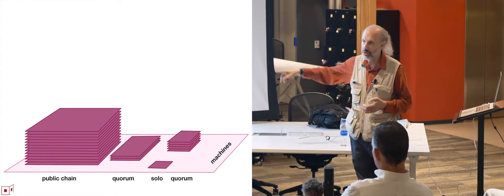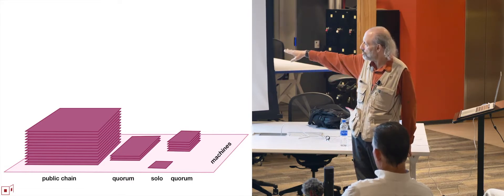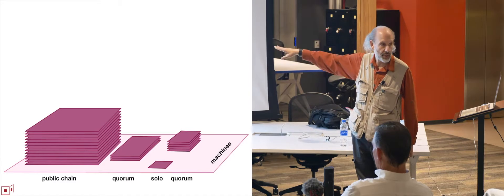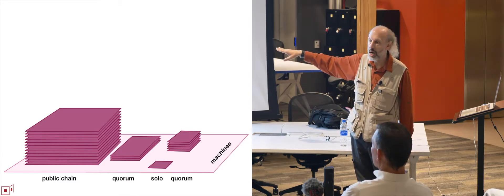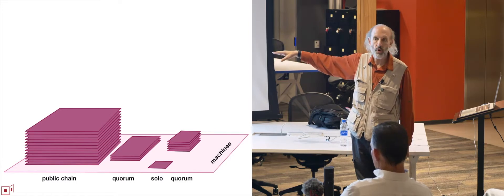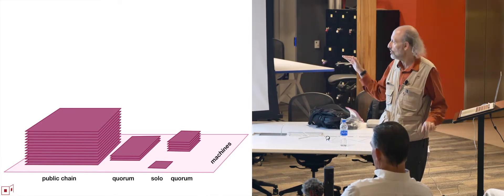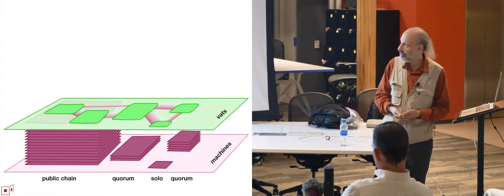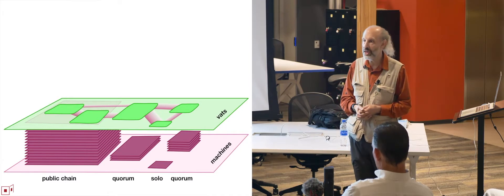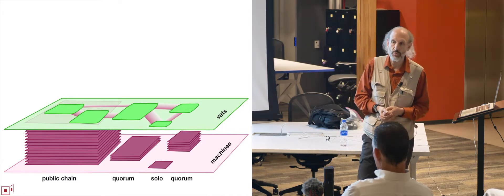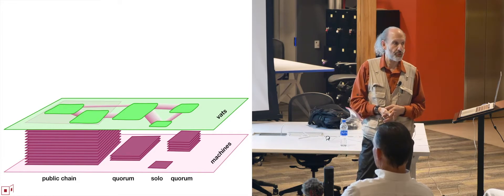The solo machine is actually just a physical machine — it's conventional. And then the quorum machines are where you have moderate replication, still giving rise to a logical machine. Those would be like permissioned quorum mechanisms like Hyperledger. What we want to do is build a level of abstraction across all of these. We want to treat each of these machines — whether they're solo machines, quorums, or chains — as nodes in a cryptographic distributed system.